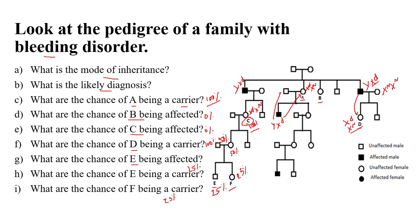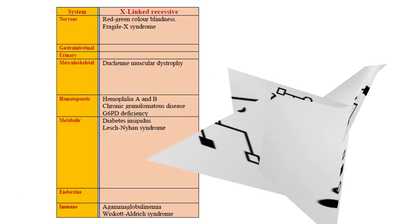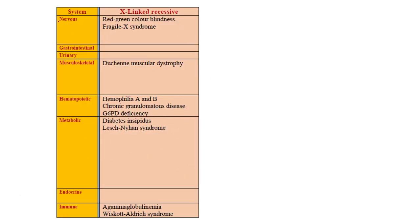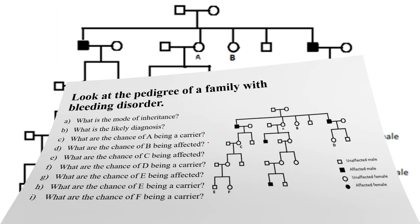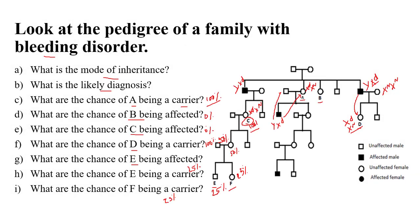So we can calculate the probability of being affected or being a carrier for any individual in X-linked recessive disorders. Examples of X-linked recessive disorders include: for the nervous system — red-green color blindness; musculoskeletal — Duchenne muscular dystrophy; hematological — hemophilia A and B, and glucose-6-phosphate dehydrogenase deficiency; metabolic diseases; and immune diseases like agammaglobulinemia. I hope you are able to understand how to calculate these probabilities. I will make other lectures on autosomal dominant and autosomal recessive inheritance. Thank you.